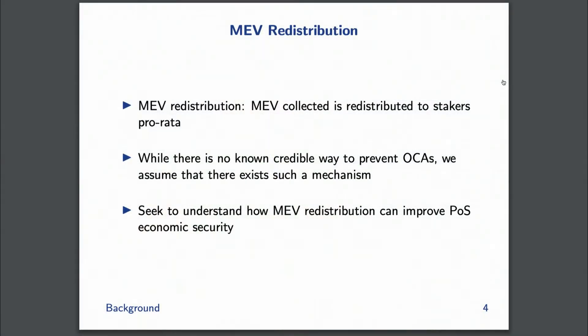Abadia and Vemla probably performed the first analysis of this, and we want to analyze it more formally. MEV redistribution or MEV smoothing is really about redistributing some fraction of collected MEV pro-rata to stakers. While there's no known credible way to prevent off-chain agreements, for this analysis we assume there exists such a mechanism — either from how the proposer consensus rules are built, or something like Eigenlayer.